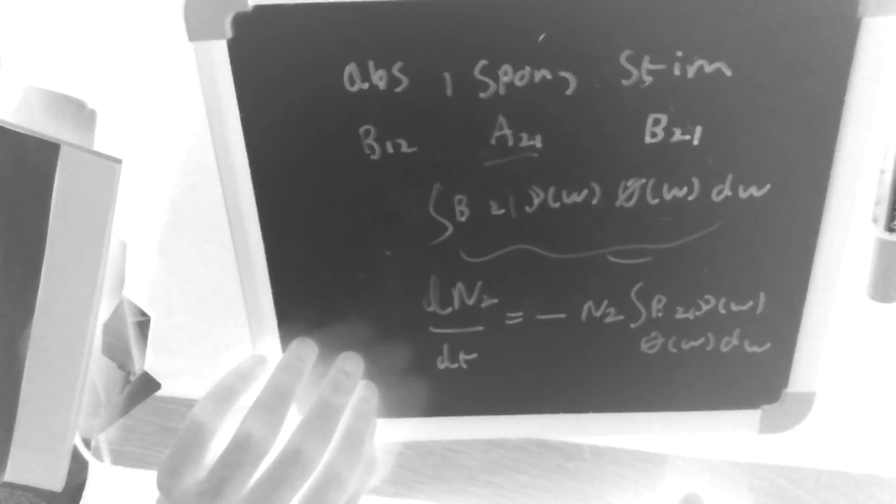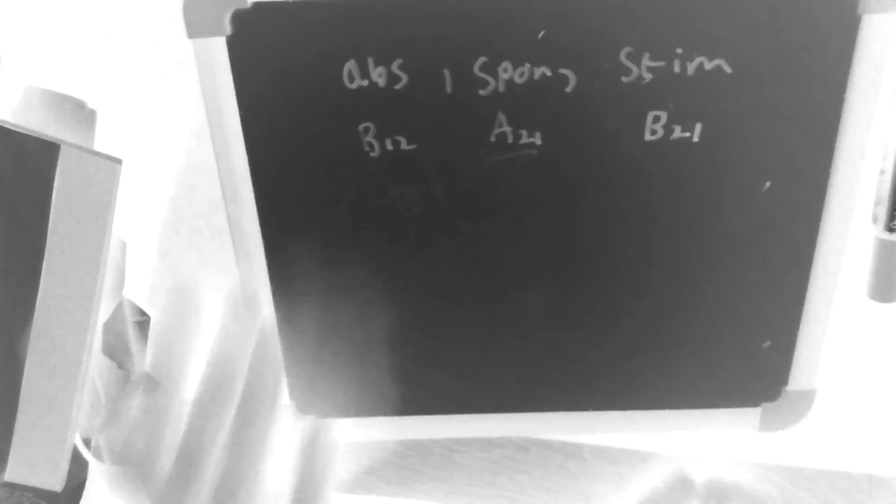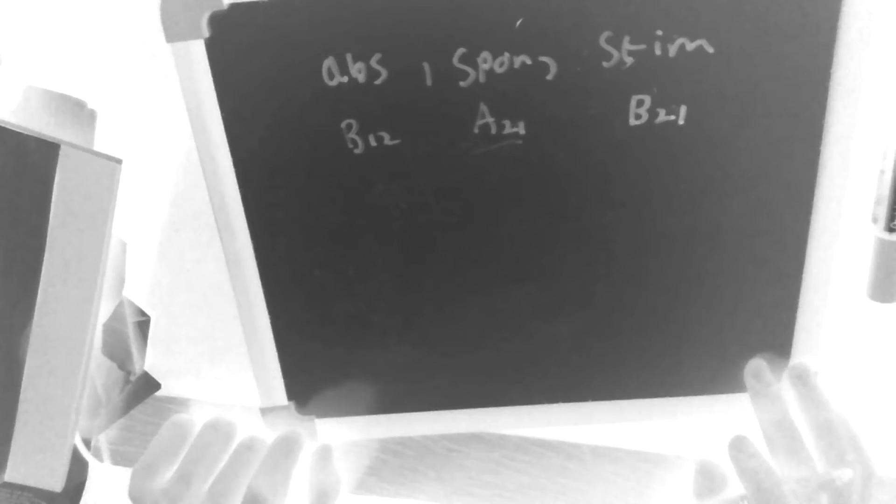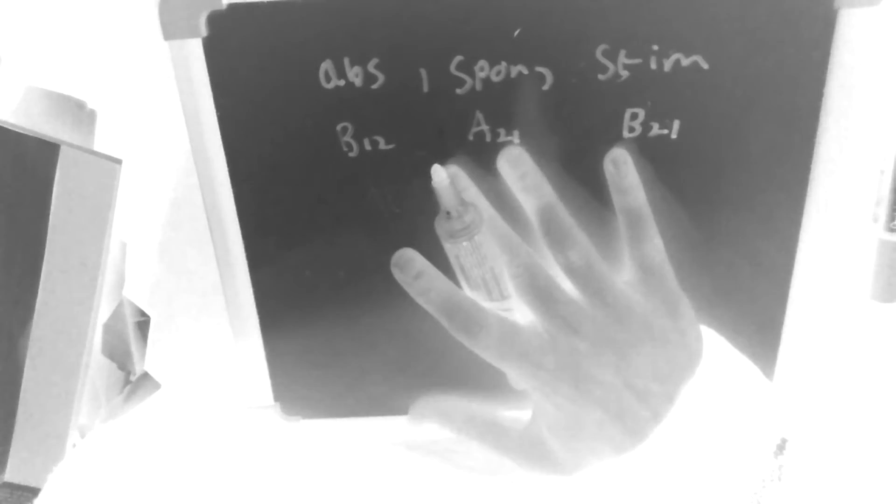So they are basically the Einstein coefficients and it's probably worth noting some things. As I've mentioned, they do not depend on the radiation field. They are basically constant. I say basically because I have read that they may depend on vacuum fluctuations, but in all practical purposes they're essentially constant for a given radiation field. And they're basically independent of radiation field.